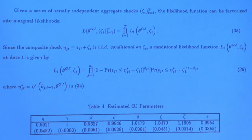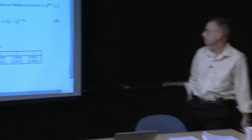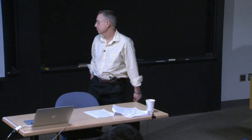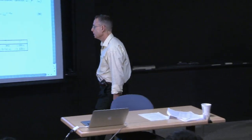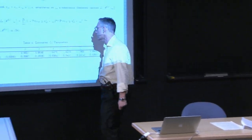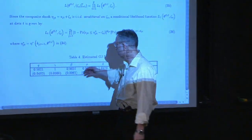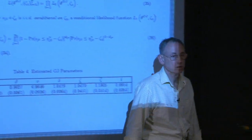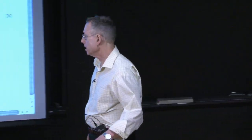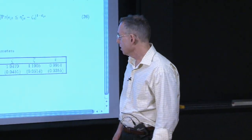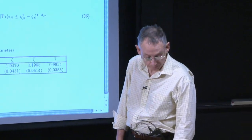One question: gamma was estimated to be 1, which would imply efficient intermediation with no wedge. I'll come back to that momentarily.